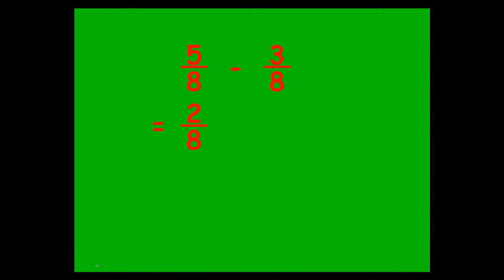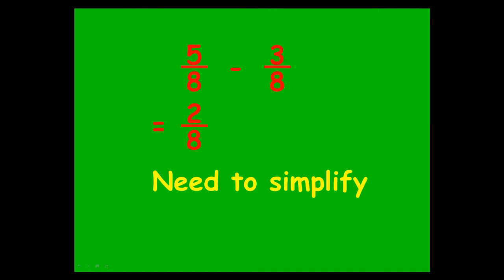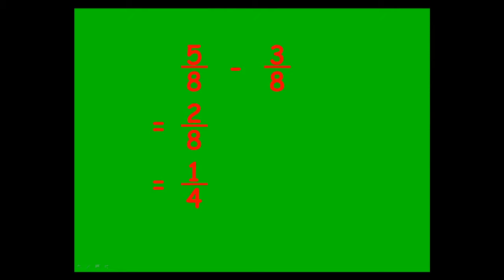Five eighths minus three eighths, you end up with two eighths. Again, simplifying — what goes into two and eight? Two times one is two, two times four is eight. So you end up with a final answer of one quarter.